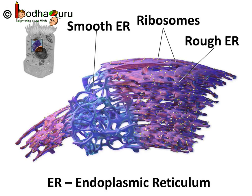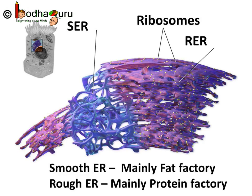Endoplasmic reticulum with smooth surface mainly produces lipid, which is one kind of fat molecule. So remember, endoplasmic reticulum with ribosomes on its surface, i.e. rough endoplasmic reticulum, also called RER, produces protein. On the other hand, smooth endoplasmic reticulum, i.e. SER, with no ribosome on its surface mainly produces lipid.